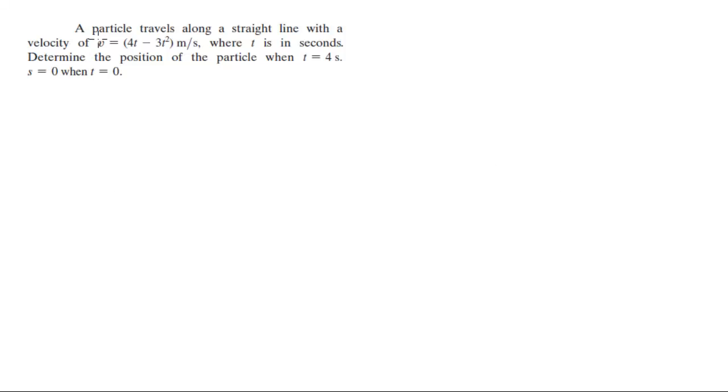Alright guys, let's do this problem where they tell you a particle travels along a straight line with a velocity of v = 4t - 3t² meters per second, where t is in seconds. Find the position of the particle when t equals 4 seconds.